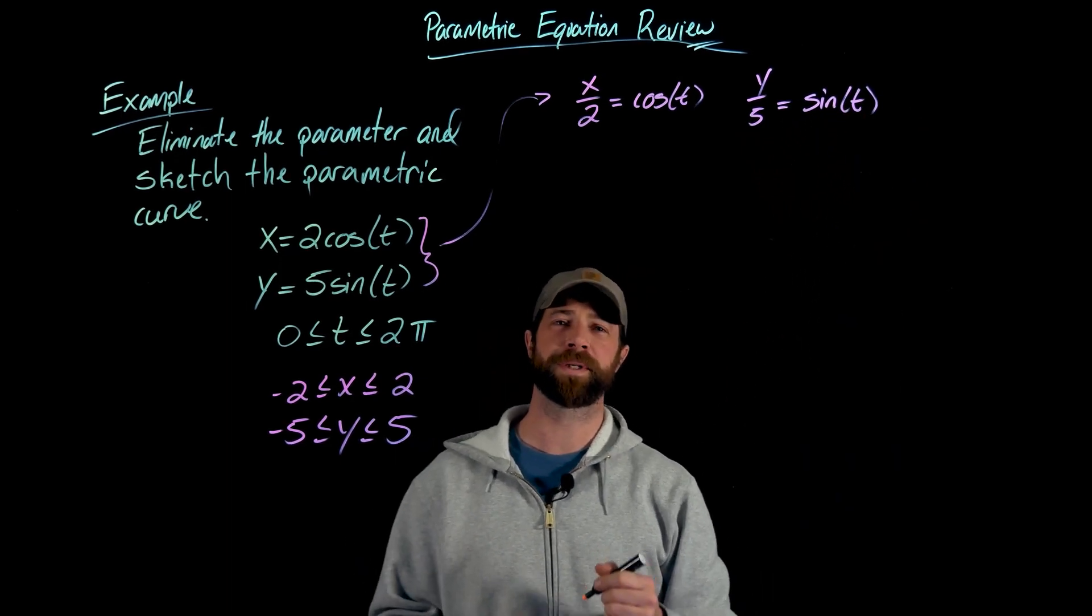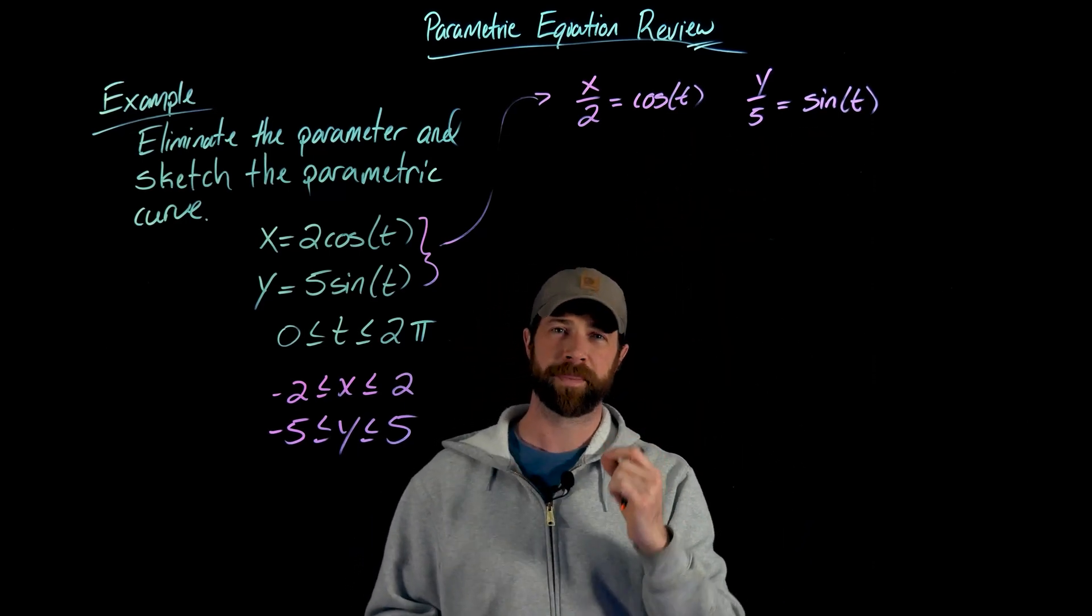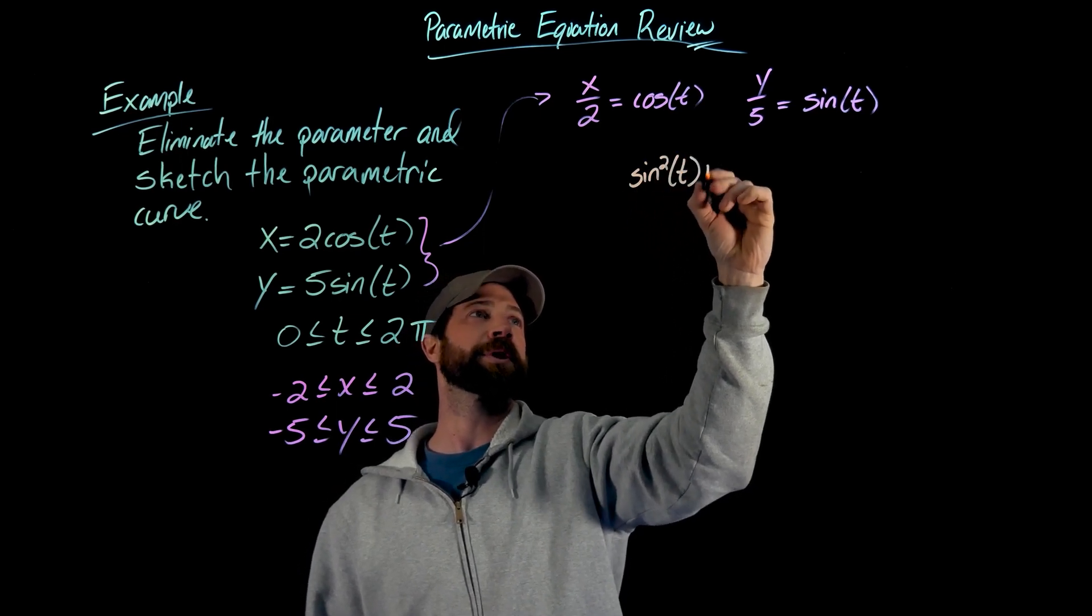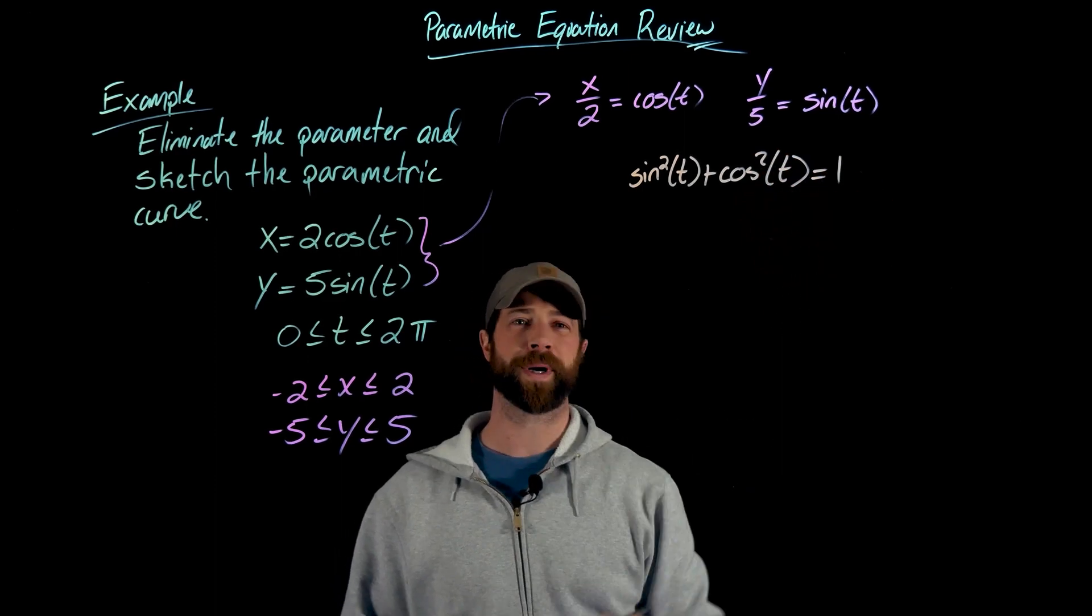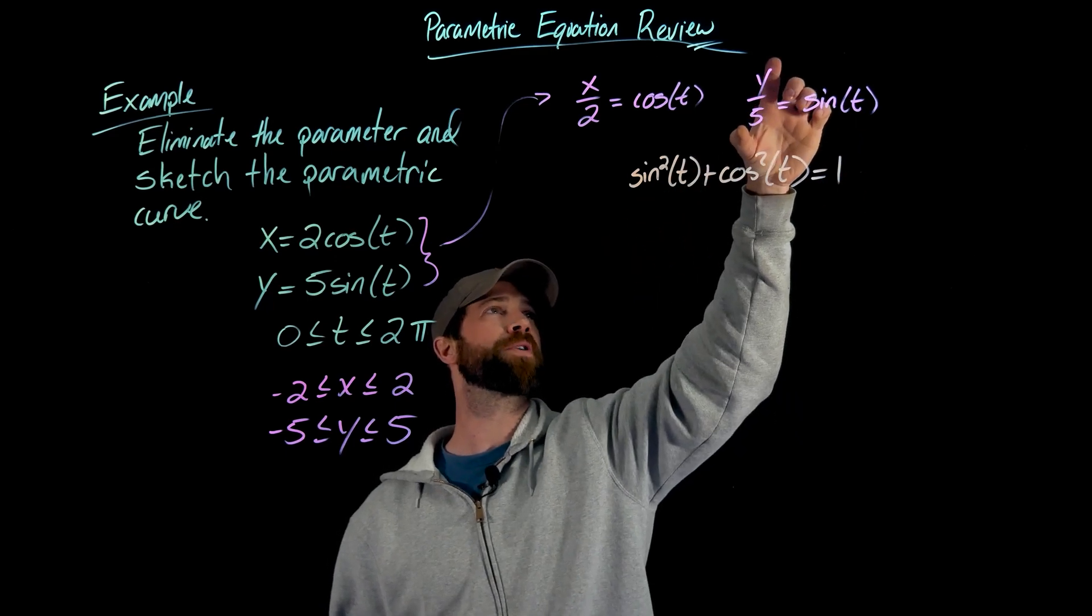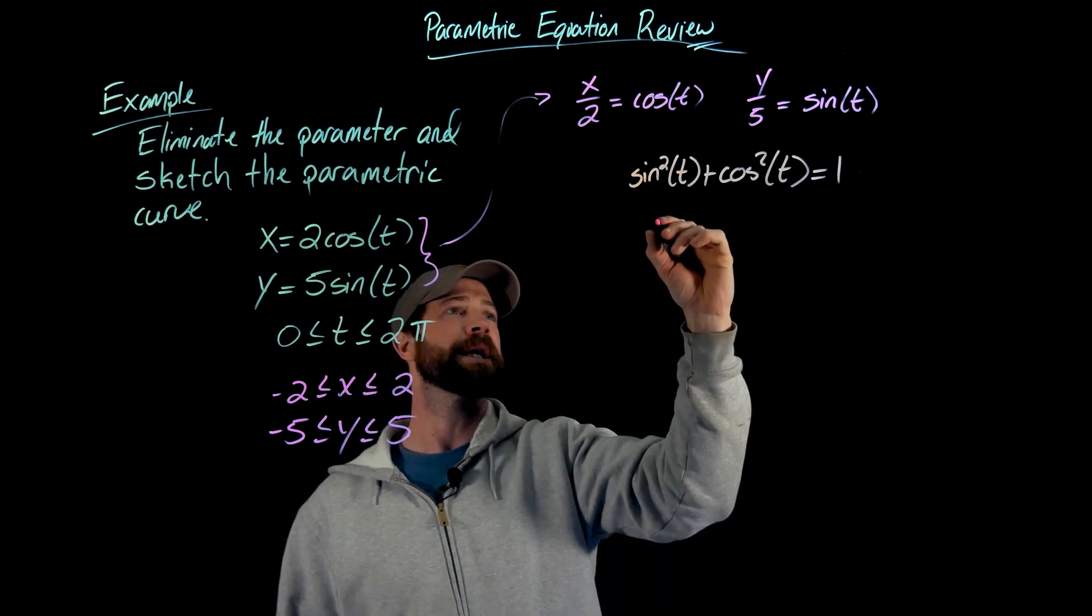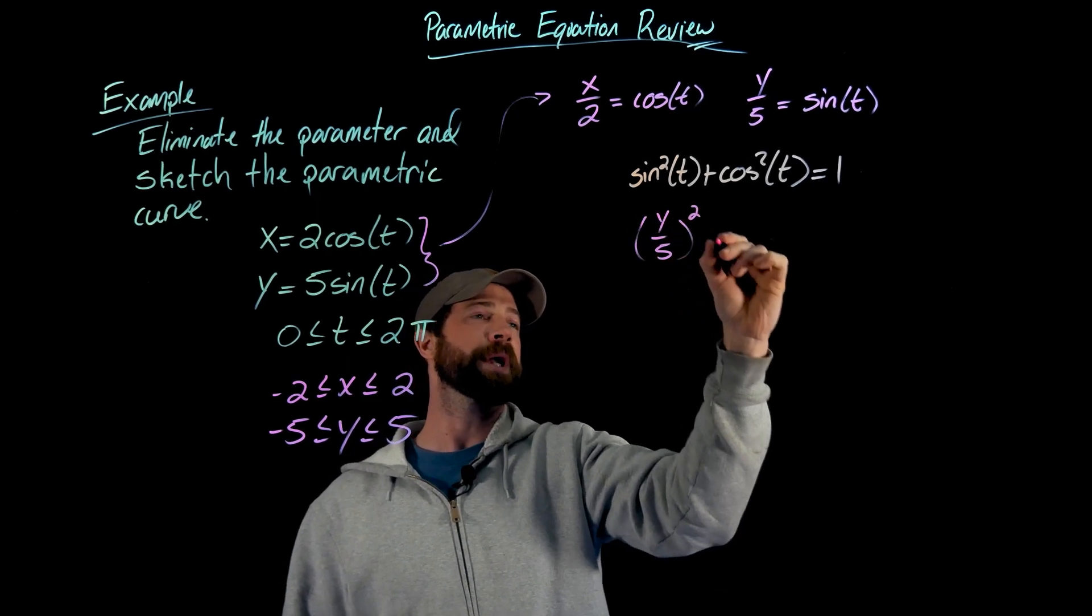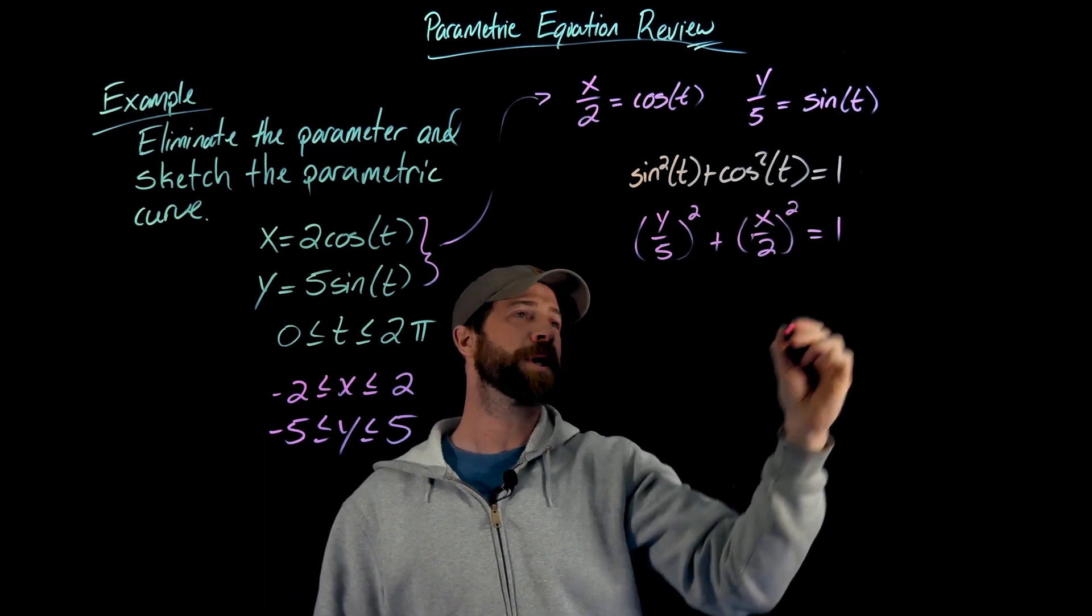Since I have sine and cosine I'm going to use the Pythagorean identity that sine squared of t plus cosine squared of t must equal one. So I'll simply replace sine of t with y over five and cosine of t with x over two, and this becomes y over five squared plus x over two squared equals one.